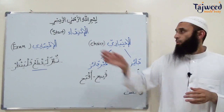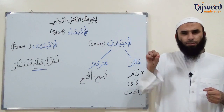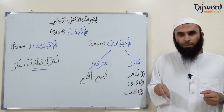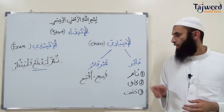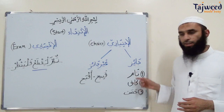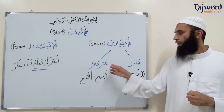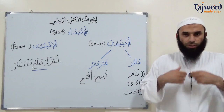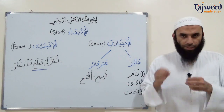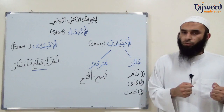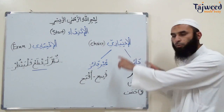Al-Ikhtiari means the optional start — starting because you have your own choice. This is of two subcategories: Jaiz, what's allowed, and Al-Ghayri Jaiz, what's not allowed. Jaiz has three groups: Tam, Kaf, and Hassan. Ghayri Jaiz — what's not allowed in the optional start — is something called Ibtida al-Qabih, which is a repulsive start. So Jaiz has three groups that are allowed, and what's not allowed is one group. This is Al-Ibtida Al-Ikhtiari, which we're going to be looking at today inshallah.